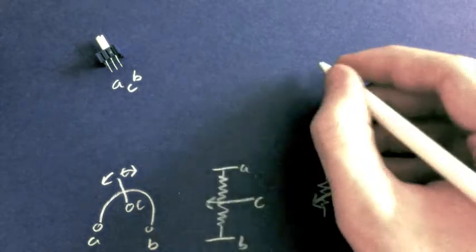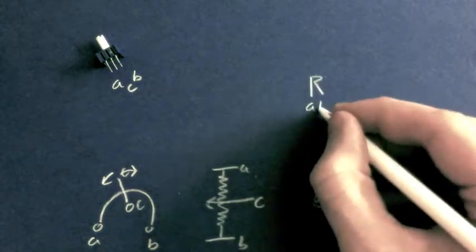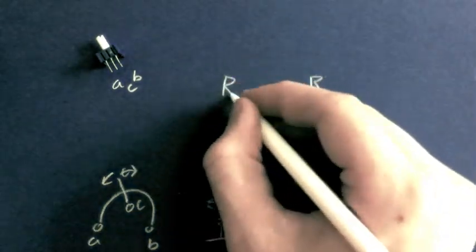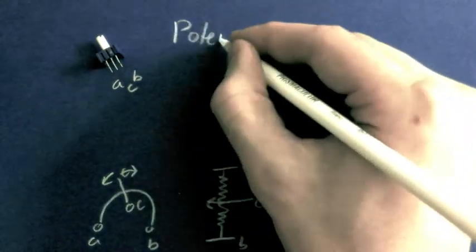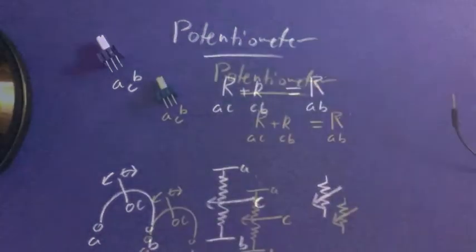Now, the one thing that we know for sure is that resistance between A and B is always going to be the same. And if you look at the diagram, you can see that that resistance is going to be the sum of two resistances formed between A and C and C and B. So that's the potentiometer. Now let's go see if it actually works.